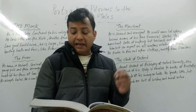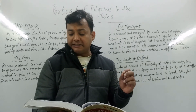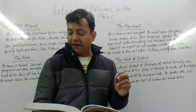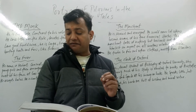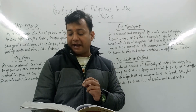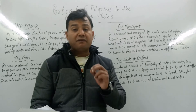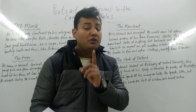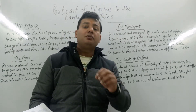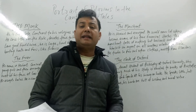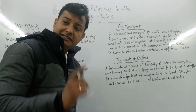The Merchant is shrewd and arrogant. Chaucer writes: 'A Merchant was there with a forked beard, in motley, and high on his horse he sat; upon his head a Flemish beaver hat. He reasoned ever the increase of his winning.' You must go through this passage carefully.